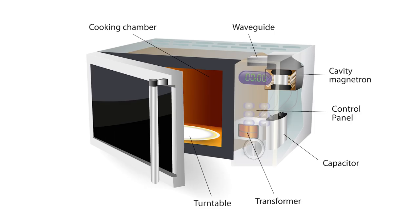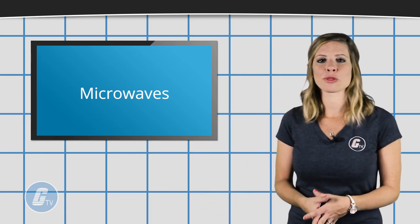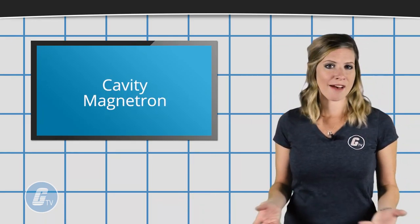They also have a turntable and a control panel. Microwaves convert electricity into heat through the use of a device known as a cavity magnetron.